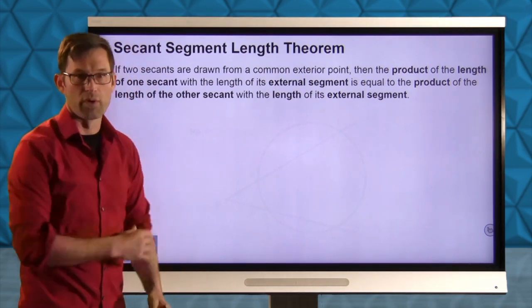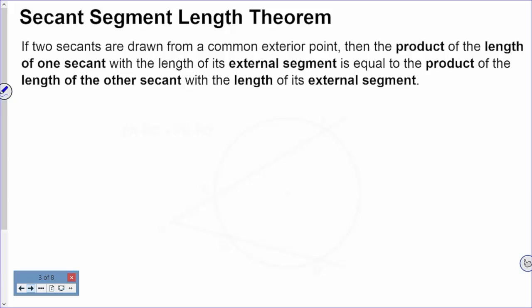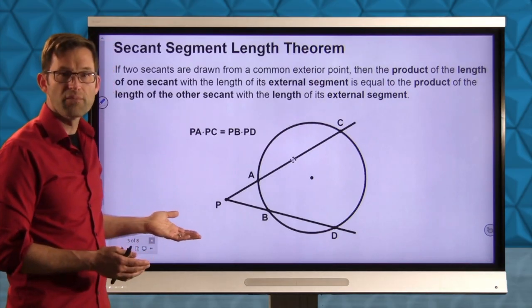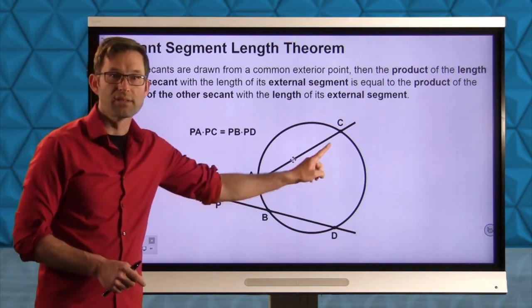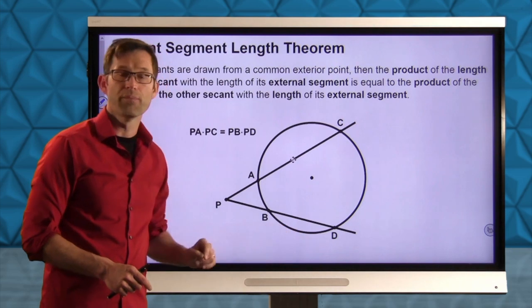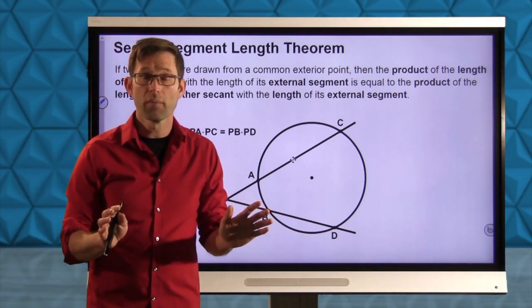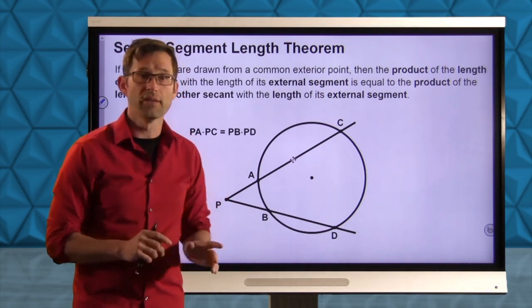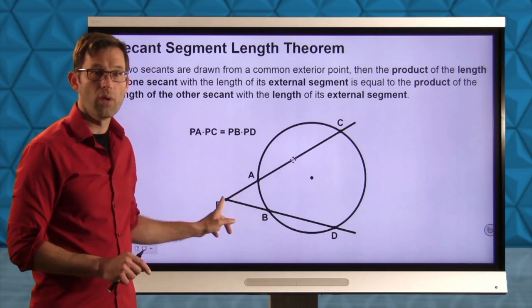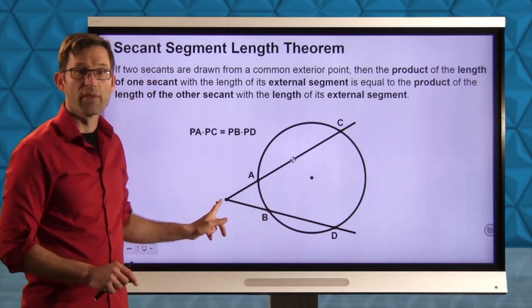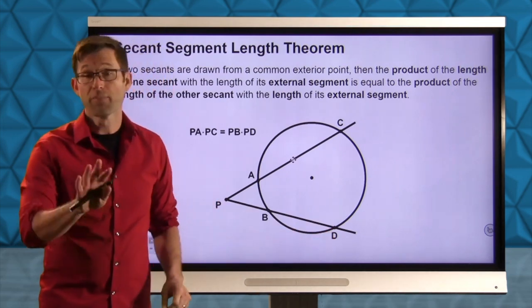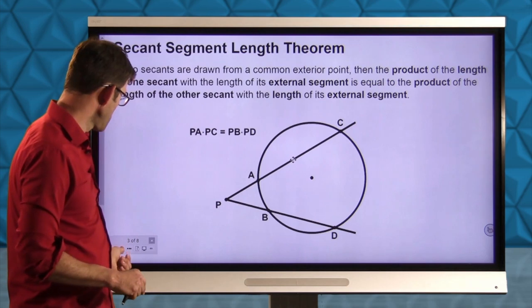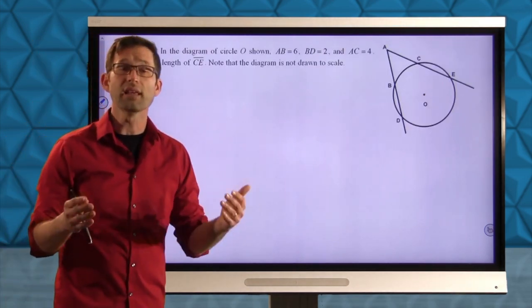Secant Segment Length Theorem: If two secants are drawn from a common exterior point, the product of the length of one secant with the length of its external segment is equal to the product of the length of the other secant with the length of its external segment. So PA times PC equals PB times PD. That's really the entire thing we're going to be doing today. Even when we get tangents involved, it'll be the same idea.